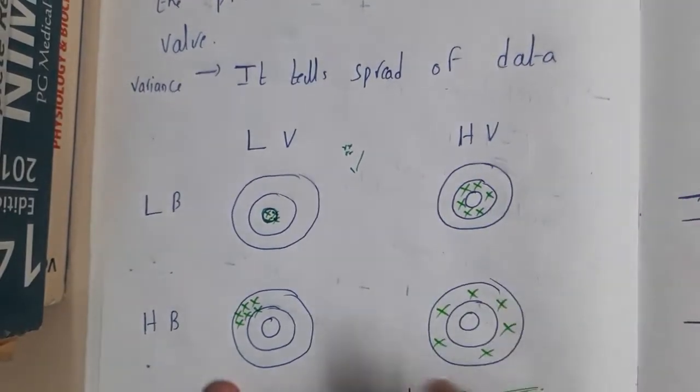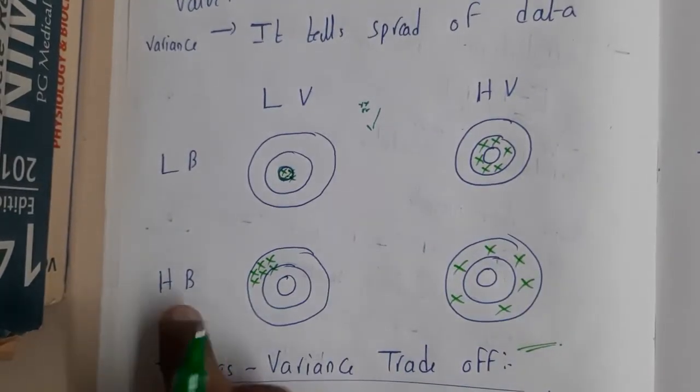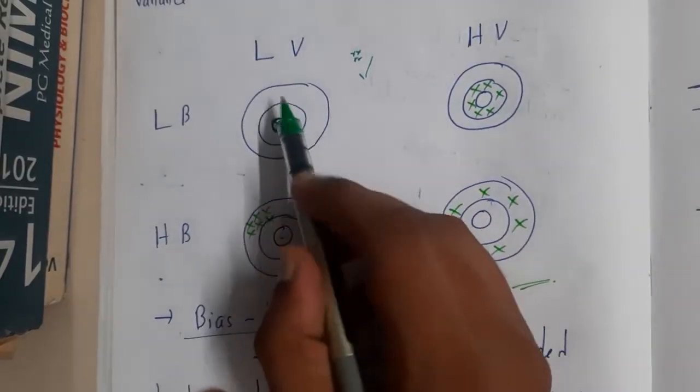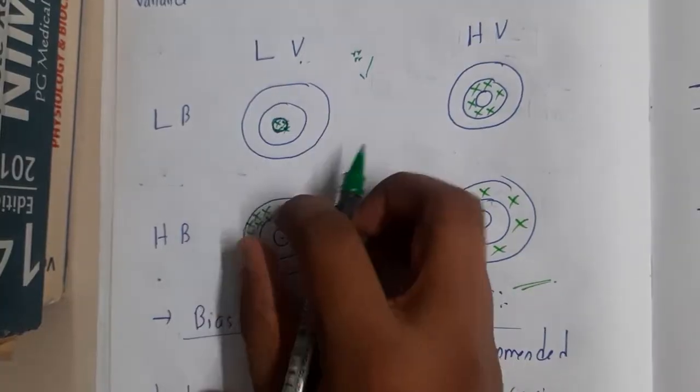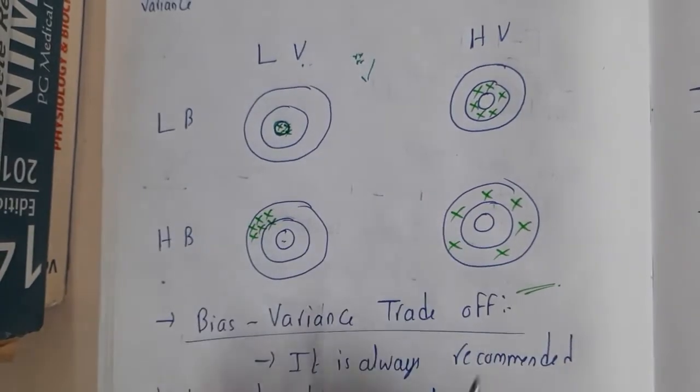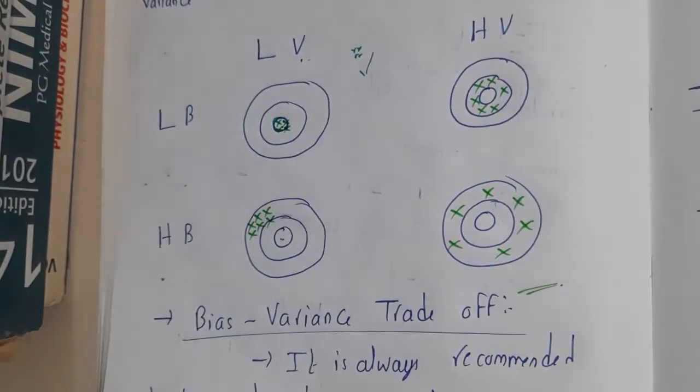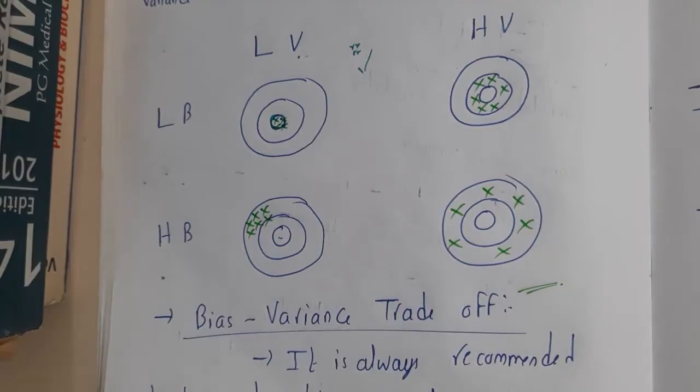If your bias is high, you're not predicting exact values. In that situation, your values will be somewhere else. If variance is low, they'll be scattered at a single point. I'm giving you this in terms of diagrams because I cannot explain these in words.